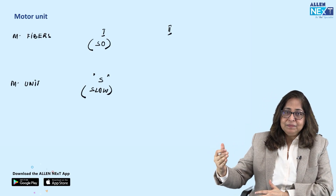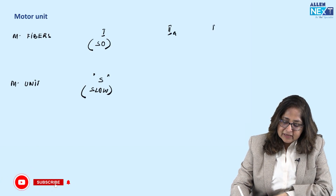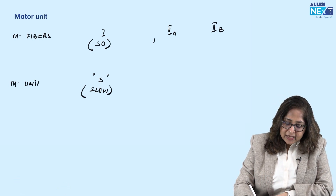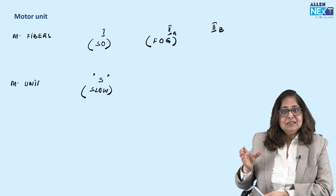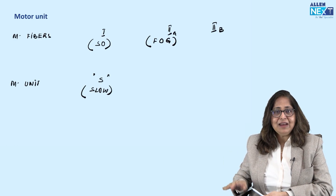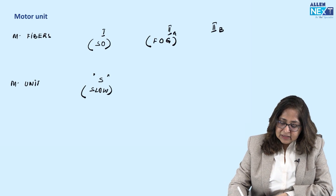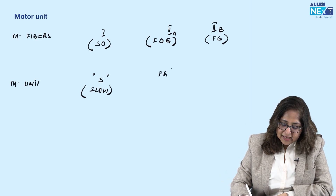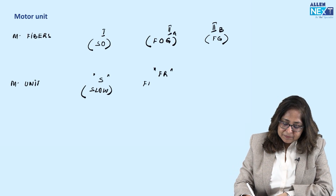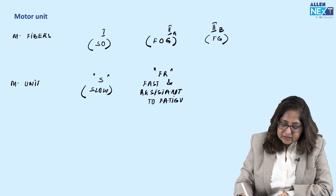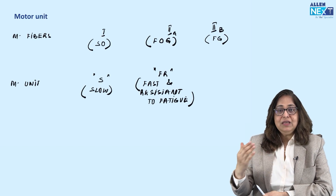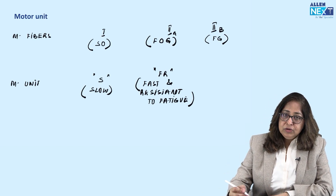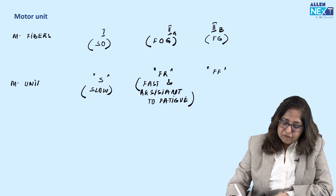Type 2 muscle fiber can be divided into type 2A and type 2B. Type 2A is FOG — fast with moderate oxidative and moderate glycolytic capacity. Type 2B has only glycolytic metabolism. The motor unit with type 2A fiber is known as the FR motor unit — fast and resistant to fatigue — because of its moderate oxidative capacity. The motor unit with type 2B fiber is known as the FF motor unit — fast and fatigable.